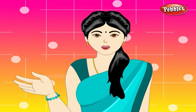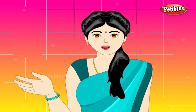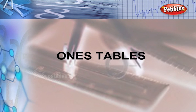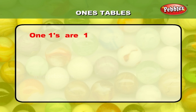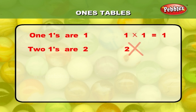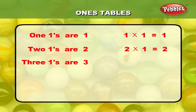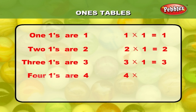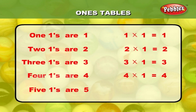Let us learn tables now. First, we will learn the 1's table. 1 one is 1; 1 into 1 is equal to 1. 2 ones are 2; 2 into 1 is equal to 2. 3 ones are 3; 3 into 1 is equal to 3. 4 ones are 4; 4 into 1 is equal to 4. 5 ones are 5; 5 into 1 is equal to 5.